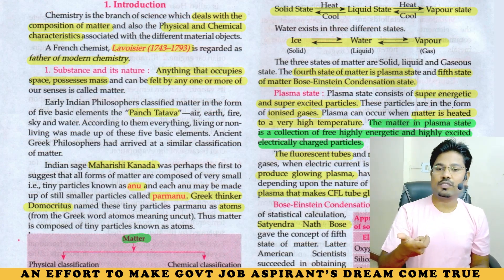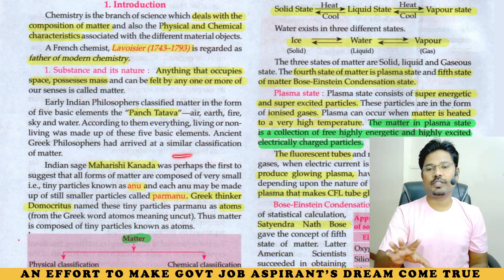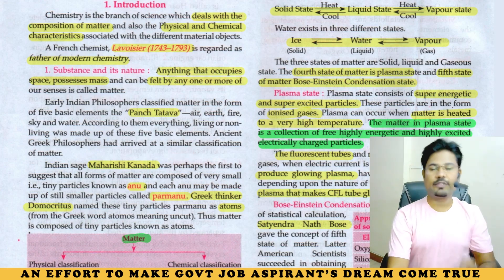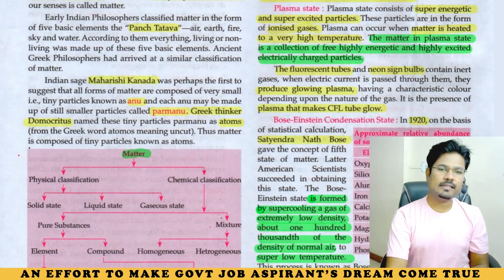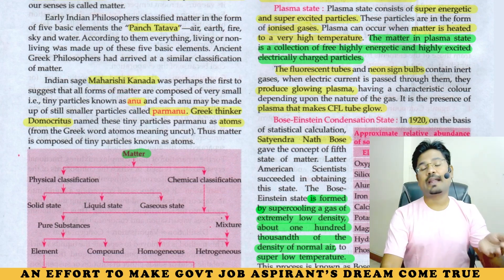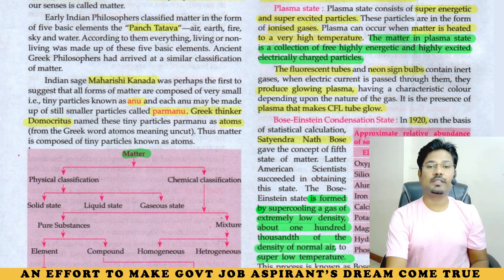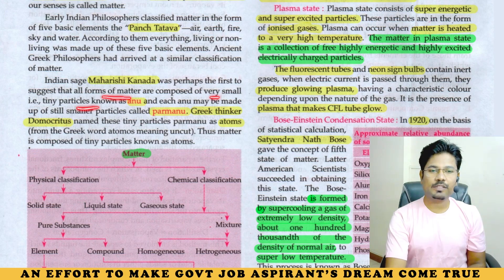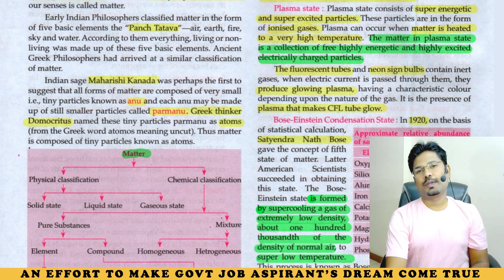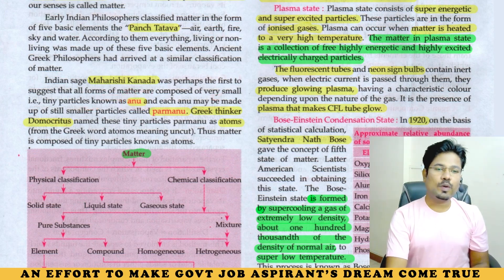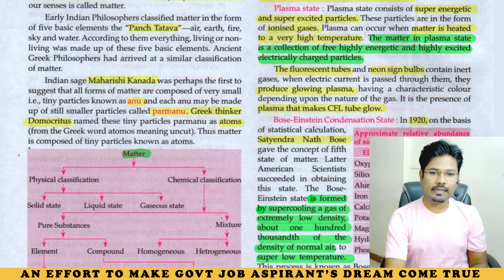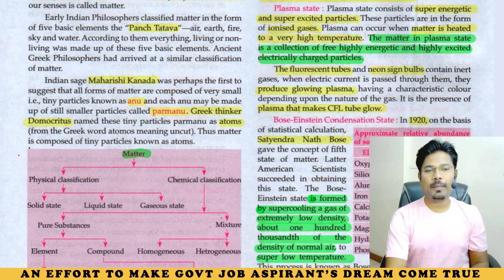Ancient Greek philosophers came to the same conclusion as our Indian philosophers. Indian sage Maharishi Kannada — perhaps he was the first person to suggest that all forms of matter are composed of very small or tiny particles known as Anu. He also suggested still smaller particles — Anu is also made up of further smaller particles called Paramanu.